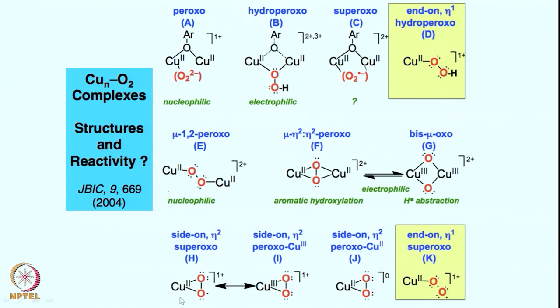In addition to the ligand, solvent, temperature, and other effects can also come into play. Once this intermediate is formed, these are very fast reactions — the copper intermediate can react with another ligand copper complex in solution to give the peroxo intermediate or the bismu-oxo species. Such a problem of one copper center reacting with another is not really there in biology, because the two copper centers are so much separated from each other they cannot react with each other. In synthetic setup, studying this is going to be much more difficult than in the biological system.